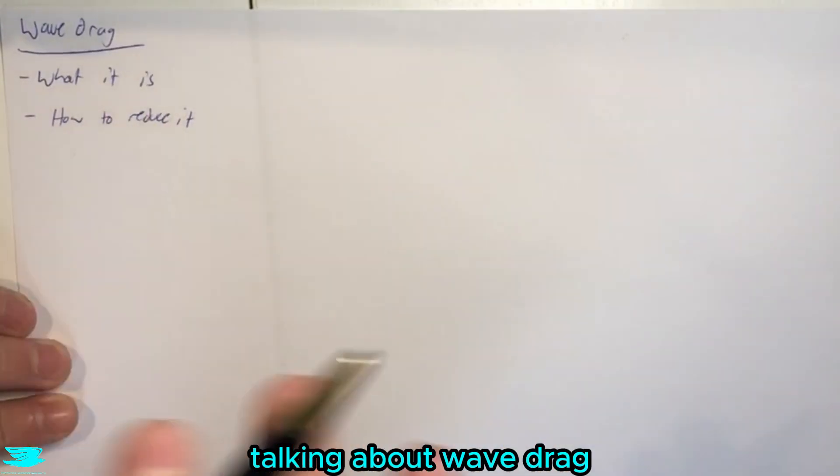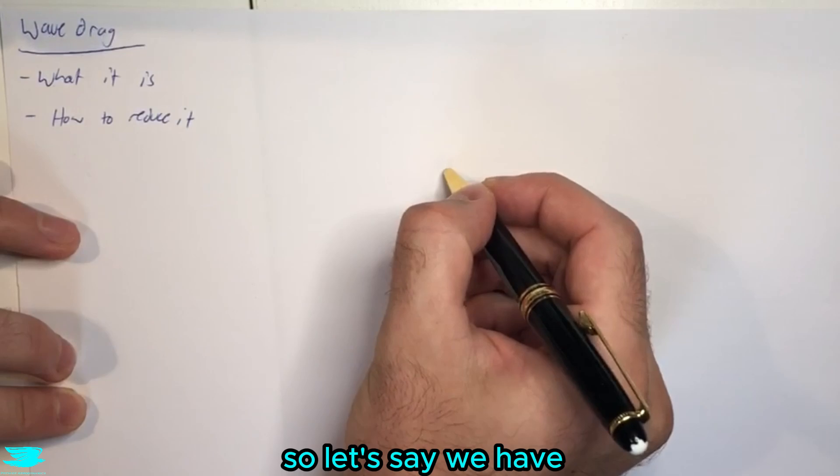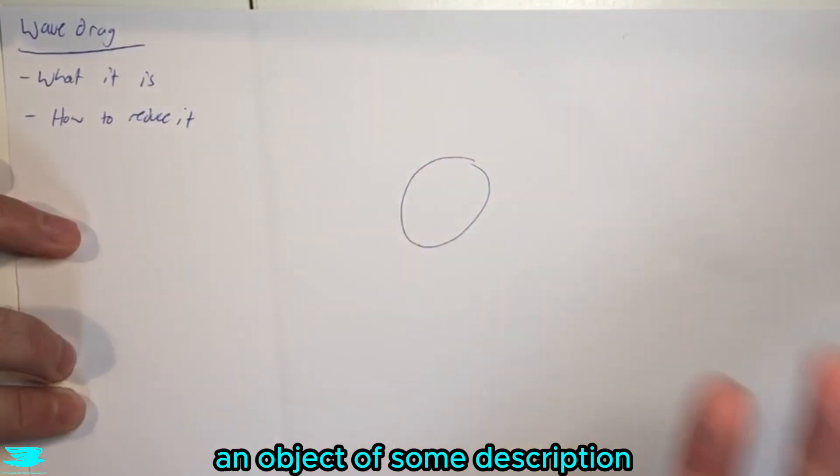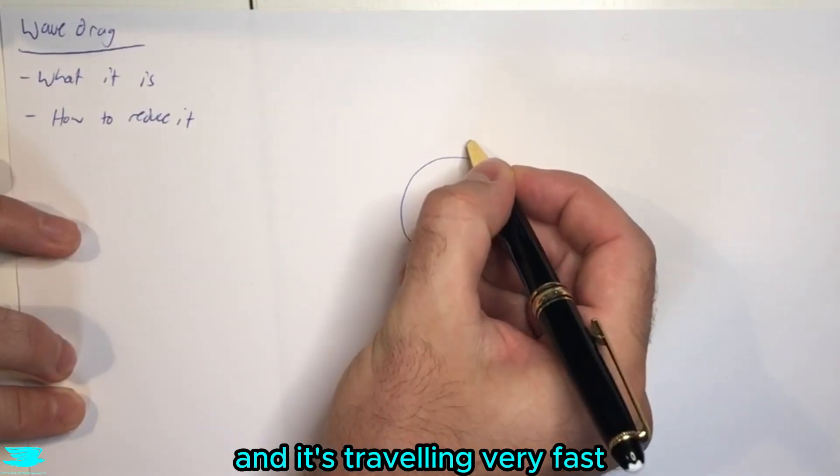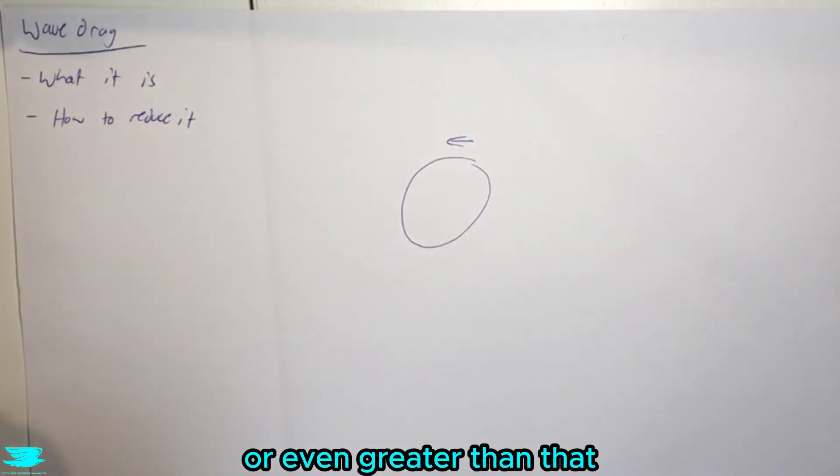What is up amigos? Today we're talking about wave drag, so what it is and how to reduce it. So let's say we have an object of some description and it's traveling very fast, so it's going along this direction at close to Mach 1 or even greater than that.